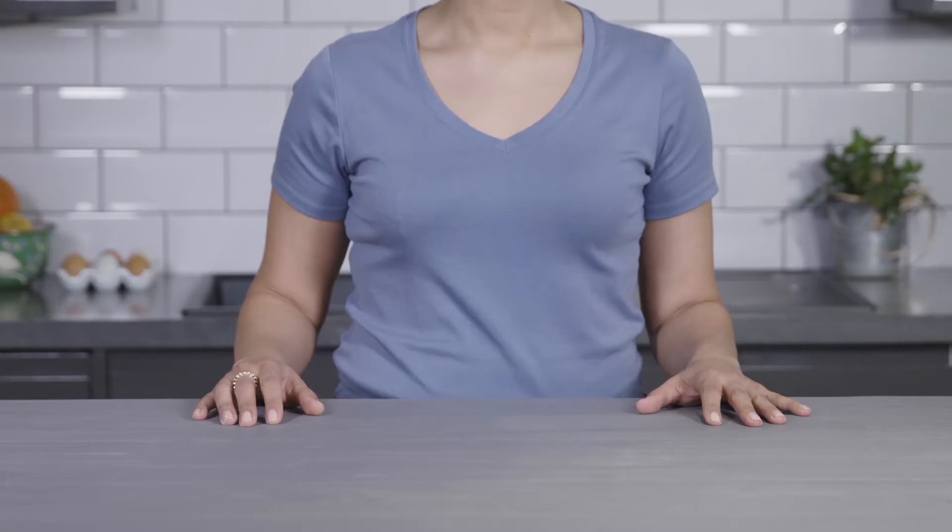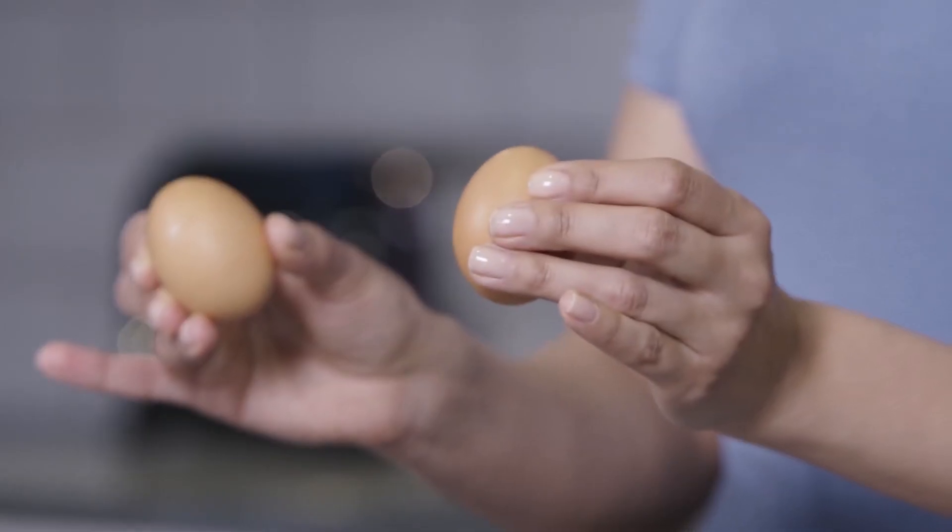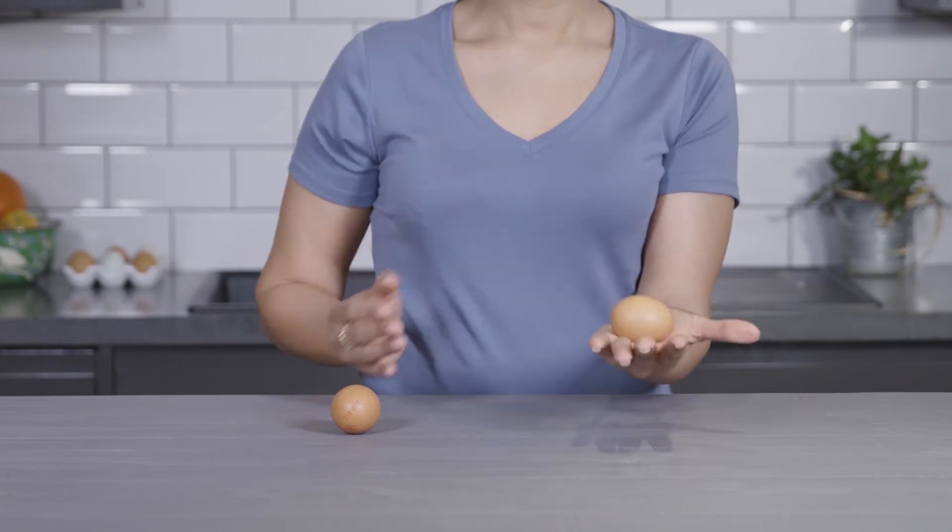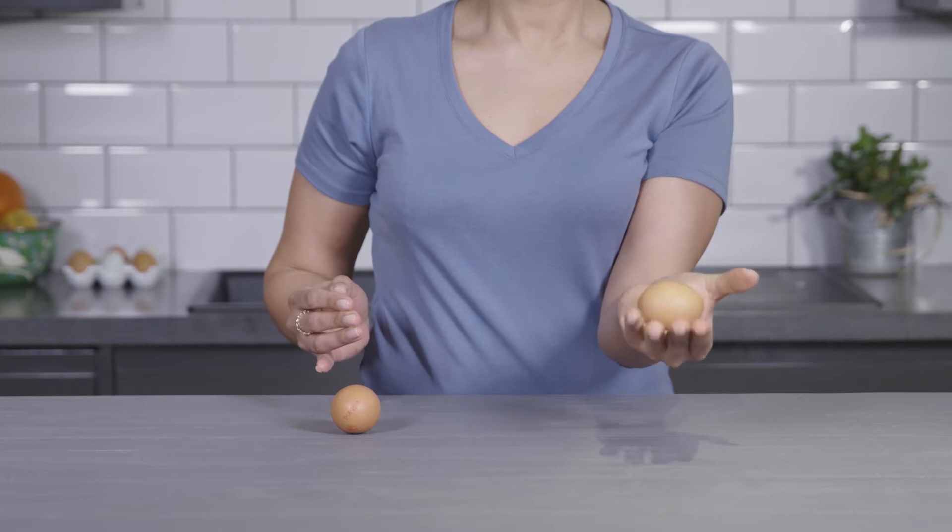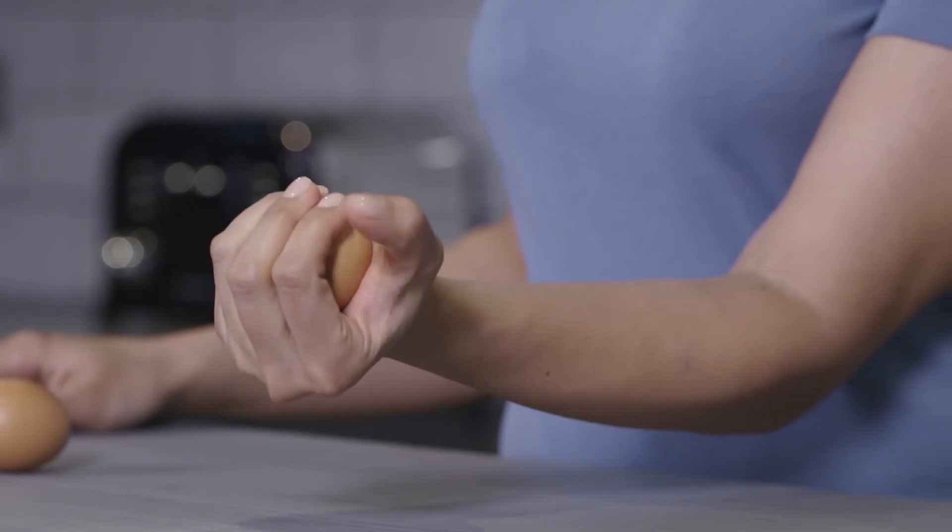How does that work? Take an egg. These are normal eggs you'd buy in a shop. Now, squeeze it as hard as you can. Go on, really go for it. It doesn't break. Turn it in any direction. However hard you squeeze, you won't be able to crack it.